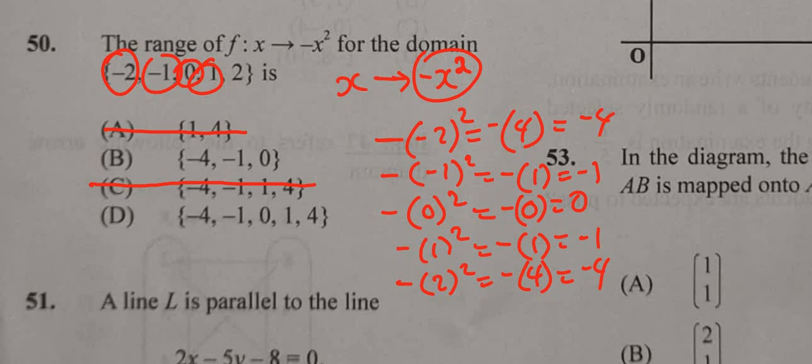So for all these, the range values are negative 4, negative 1, and 0. So the answer is B. We did not get positive 1, no positive 4, so the answer is B.